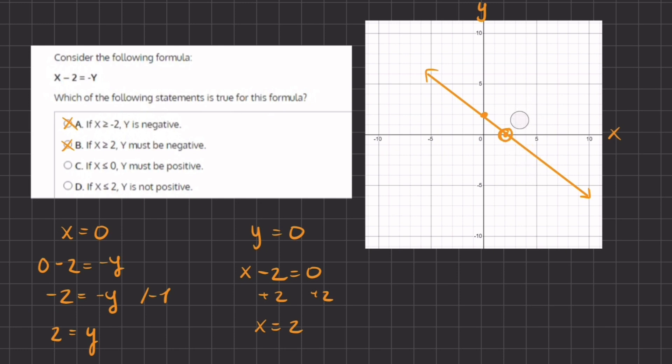So now let's move on to C. If x is less than or equal to 0, y must be positive. Now let's go to x equals 0. That's right over here. And if x is less than 0, then the y must be positive.